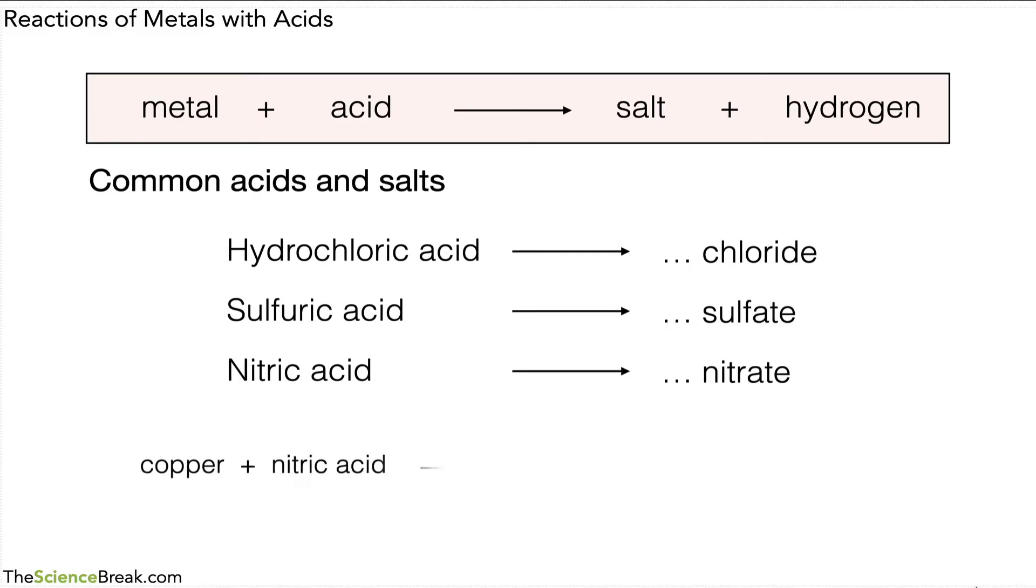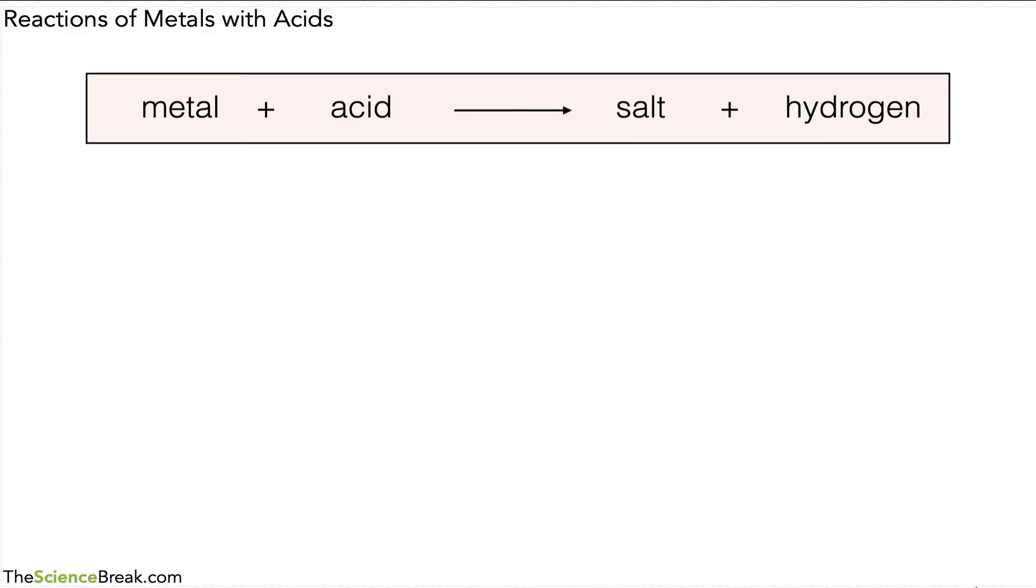Let's see another example: copper plus nitric acid. And if you're getting the hang of this, you'll see that it's a nitrate salt that's produced with hydrogen gas, so we have copper nitrate plus hydrogen. Now let's make it slightly trickier. Let's take away the names of the common acids and salts and try magnesium plus nitric acid. So pause here and give that a go, and you should have got magnesium nitrate plus hydrogen.